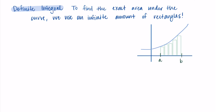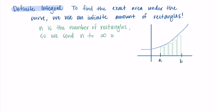When we do this, we really still do have a Riemann sum — it's just that now we have an infinite number of those rectangles rather than a finite number. In the Riemann sum, we use n to represent the number of rectangles, and so we're sending n to infinity using a limit.